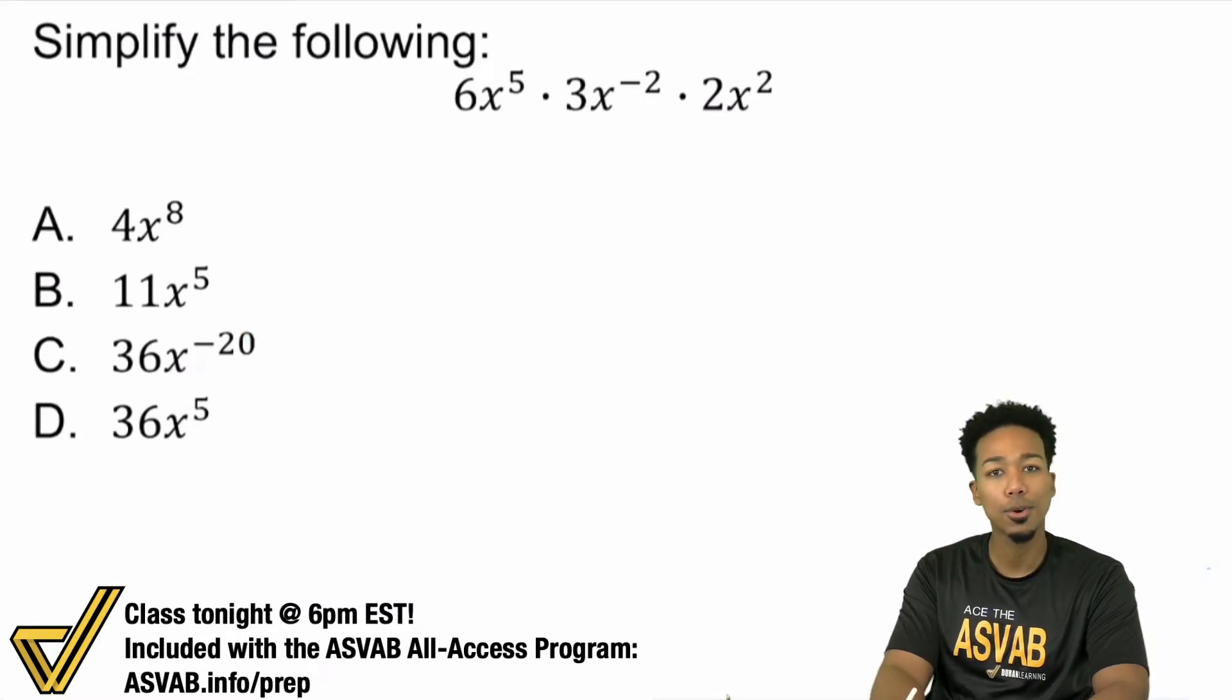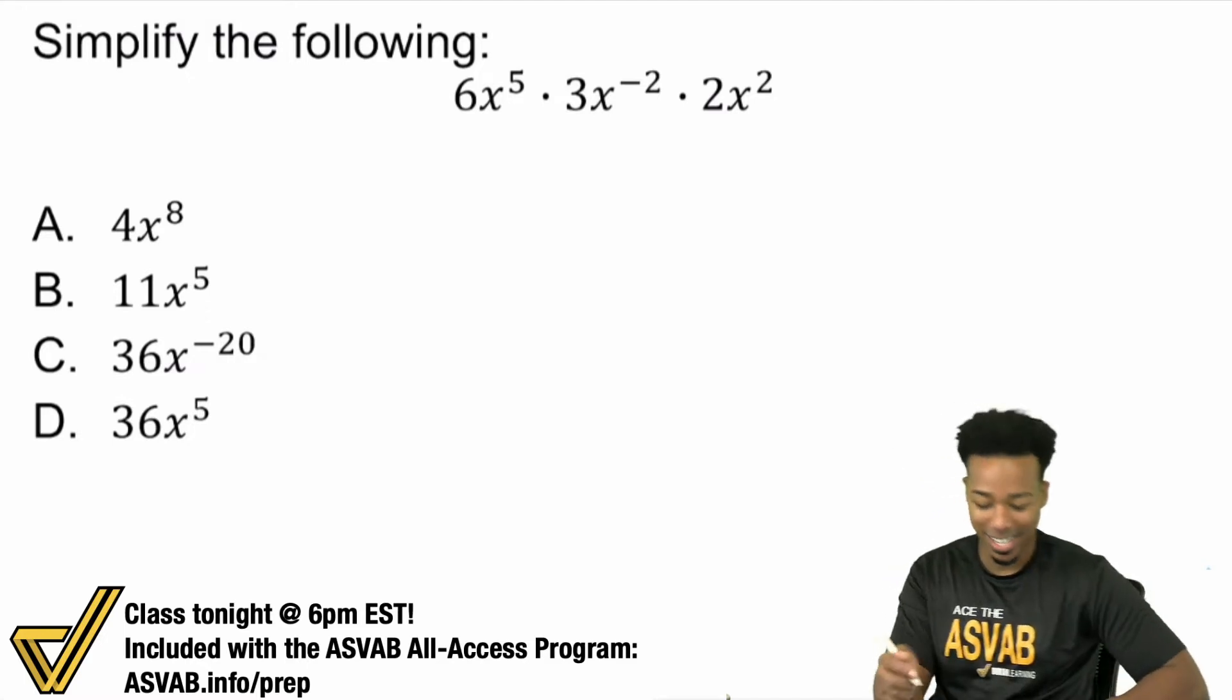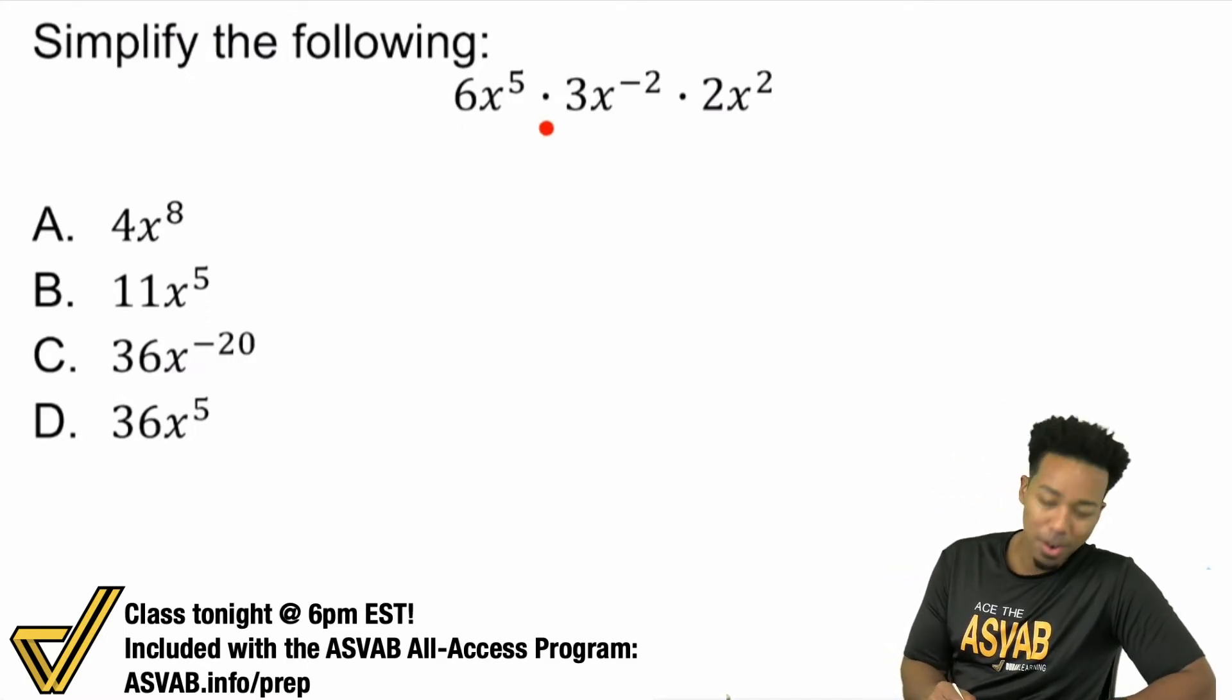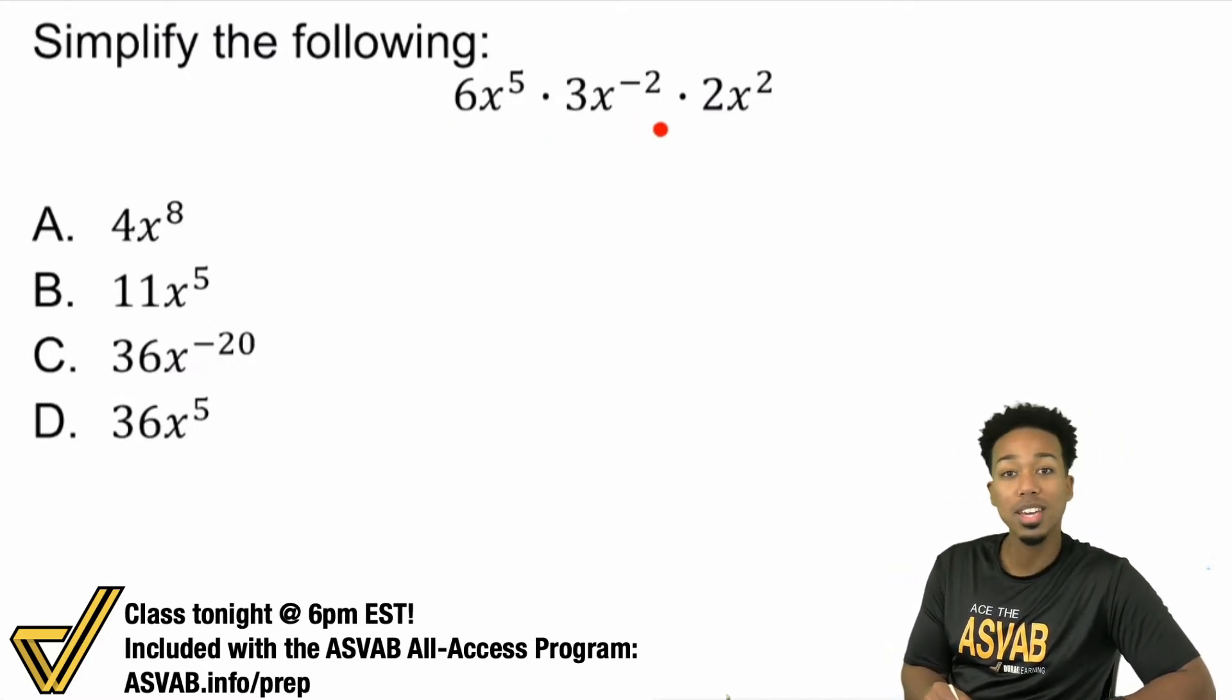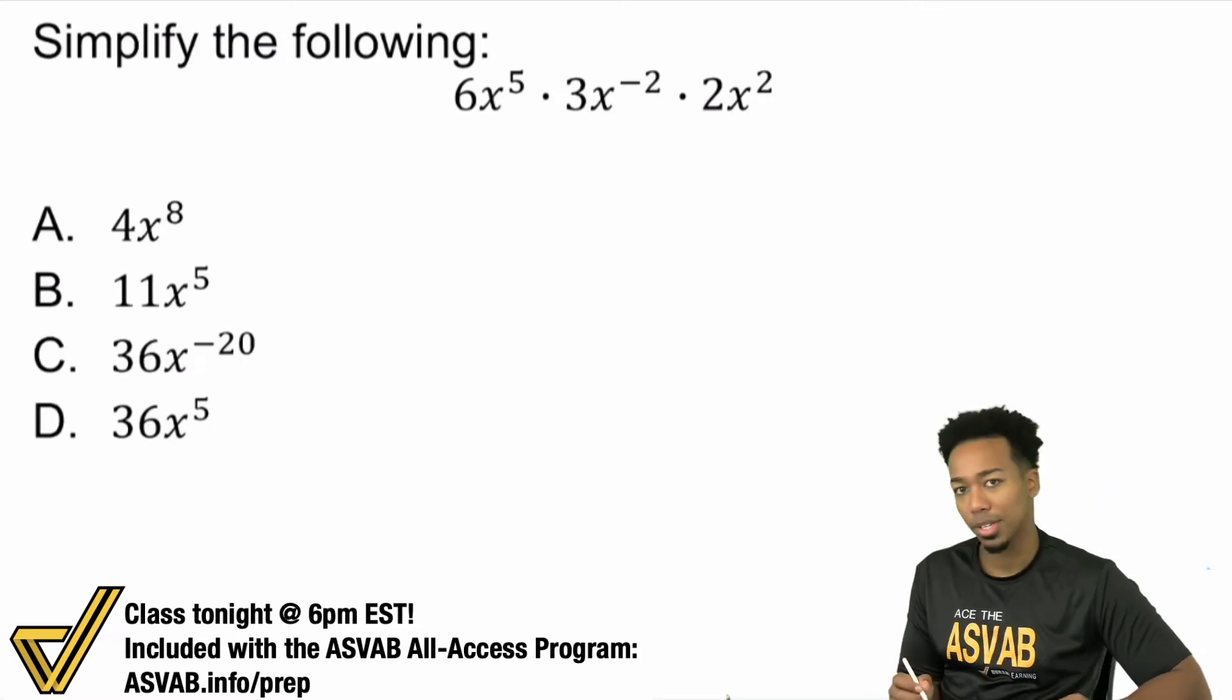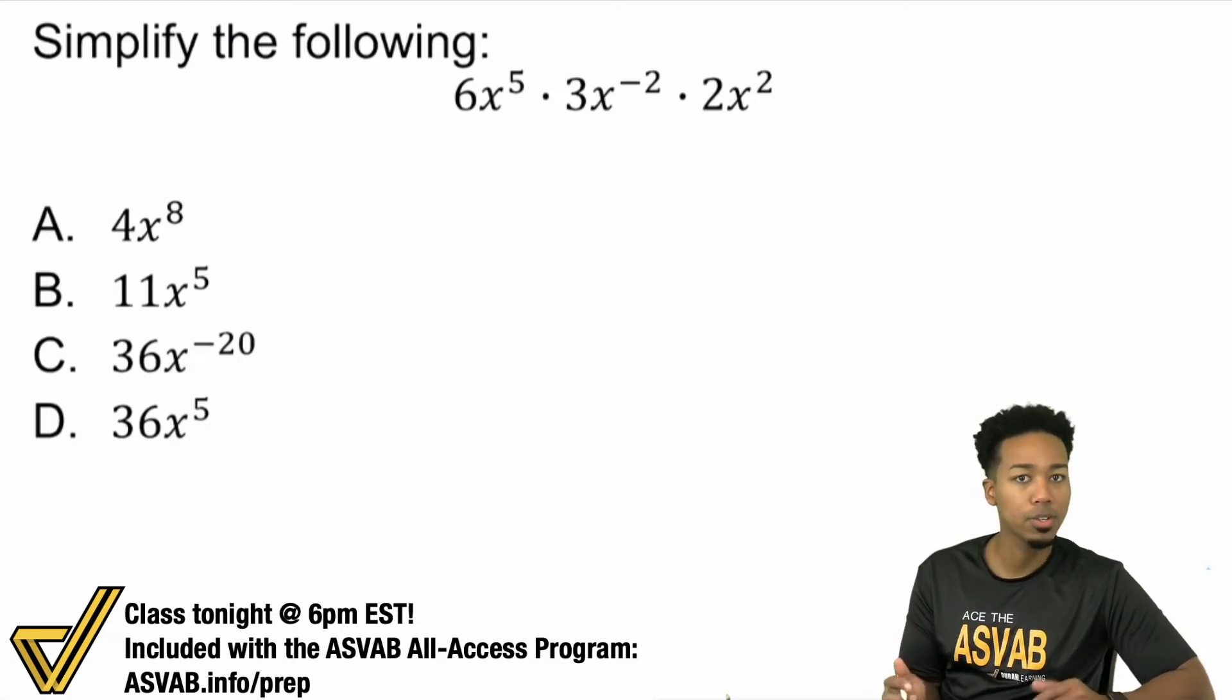Without further ado, let's go ahead and crush this thing, my party people. We have 6x to the power of 5 multiplied by 3x to the power of negative 2 times 2x to the power of 2. Here's how we're going to handle this.